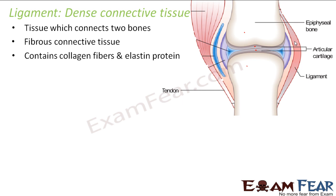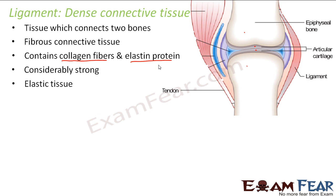Ligament contains collagen fibers and elastin protein. Collagen fibers are the most abundant fibers secreted by connective tissue, responsible for flexibility. It is considerably strong, but not very strong. People often come across problems like their ligament being torn because of accidents or even minor incidents. Ligament is not very strong — it is an elastic tissue, and it has elasticity, so it can bear some twisting and curving without breaking because of the elastin protein.